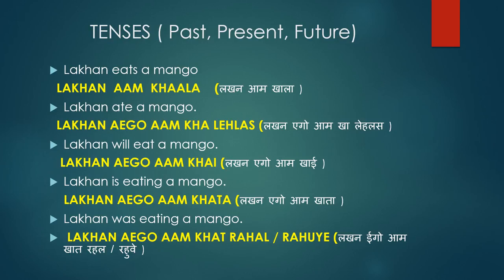Now let us learn some sentences based on tenses. We have three tenses: past tense, present tense, and future tense. Whenever you want to learn any sentence in any language, learn to pick up certain verbs and play around with them. It's very simple. I've taken a very simple sentence: 'Lakhan eats a mango.' In Hindi, we say 'Lakhan aam khata hai.'